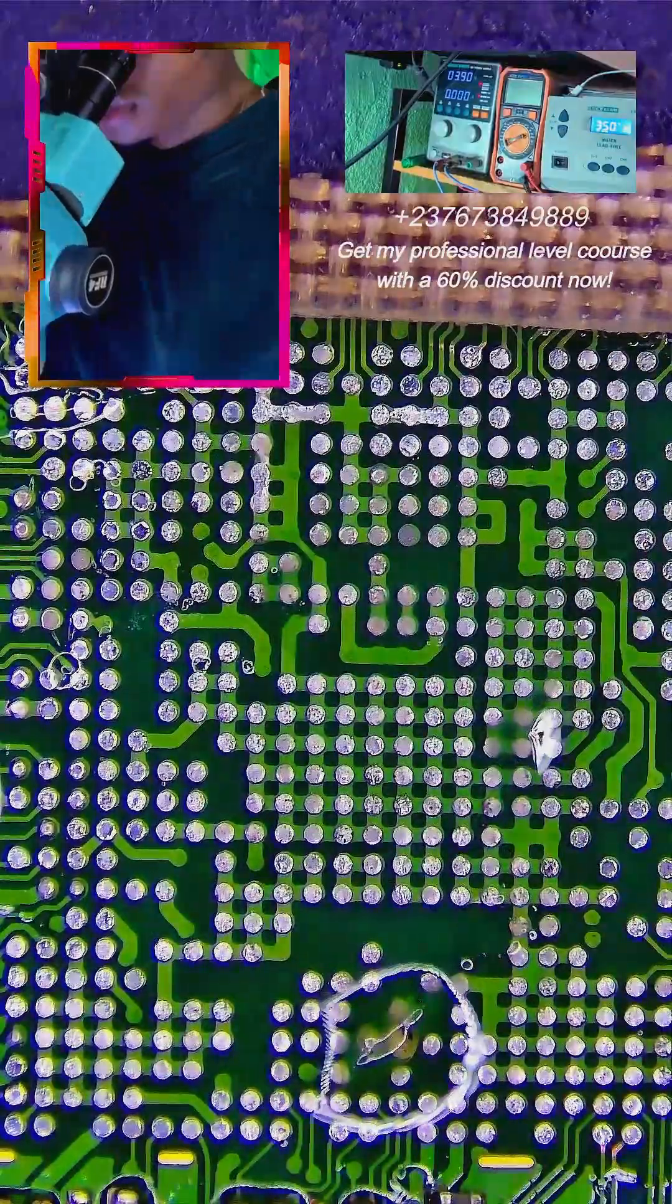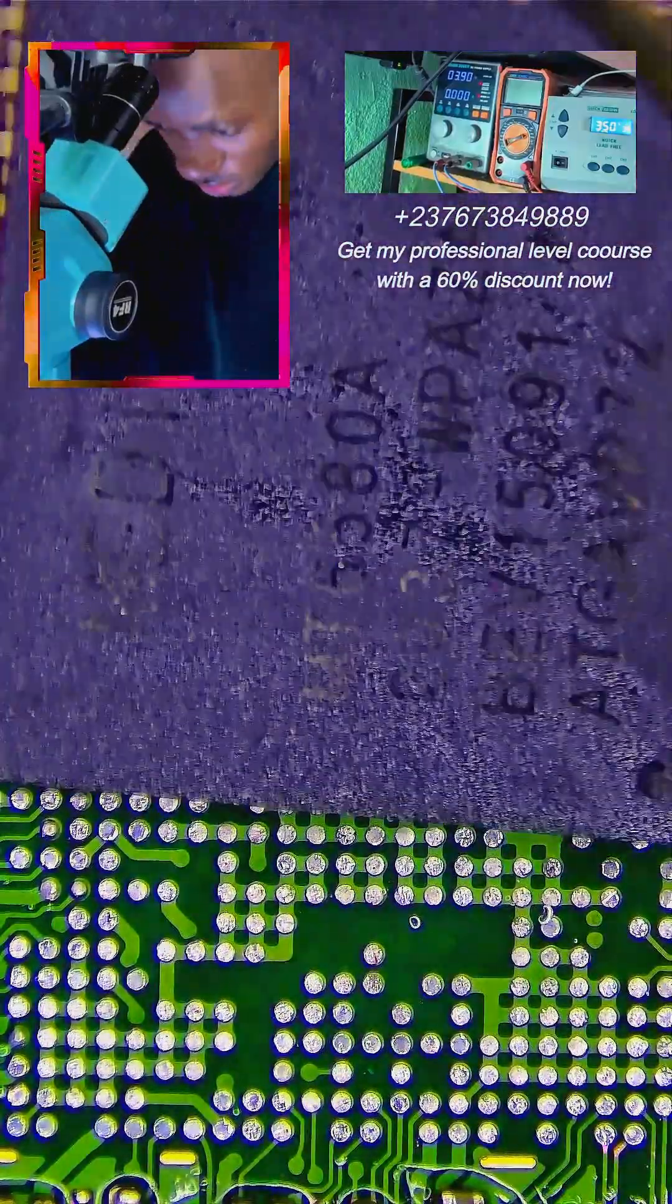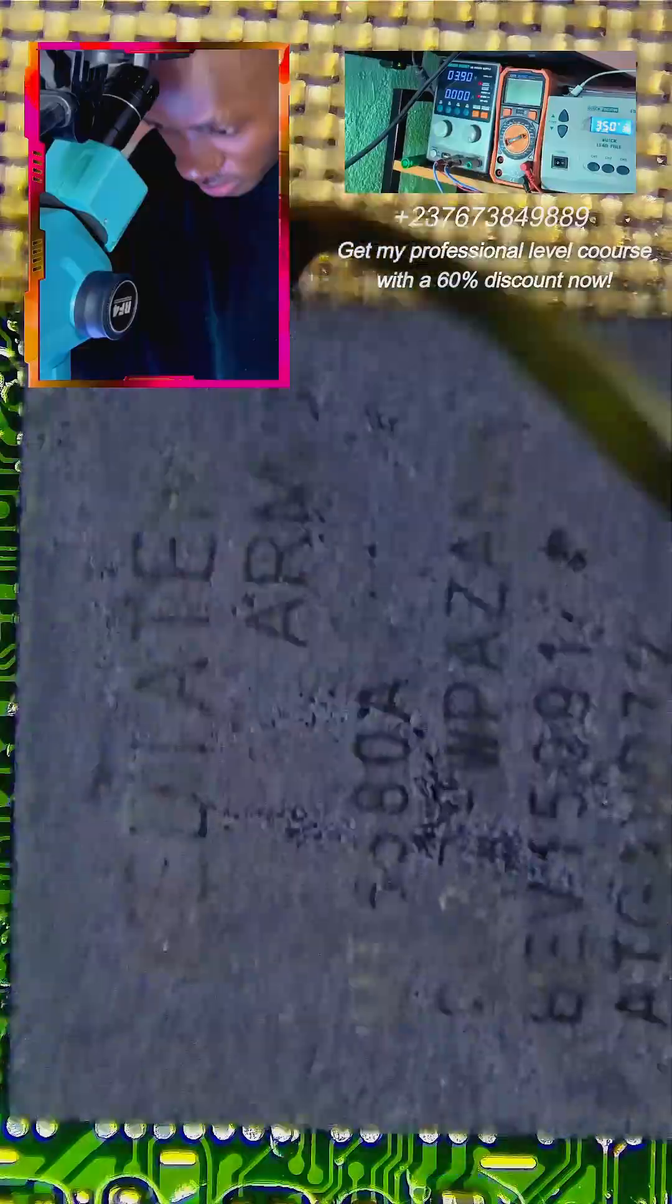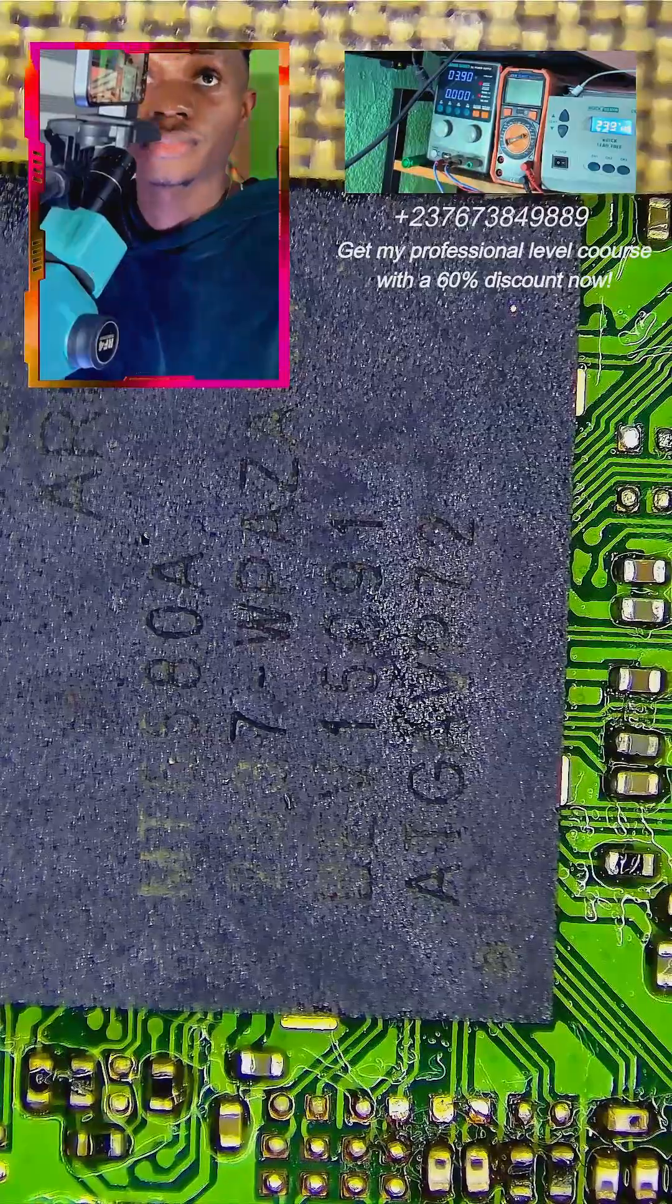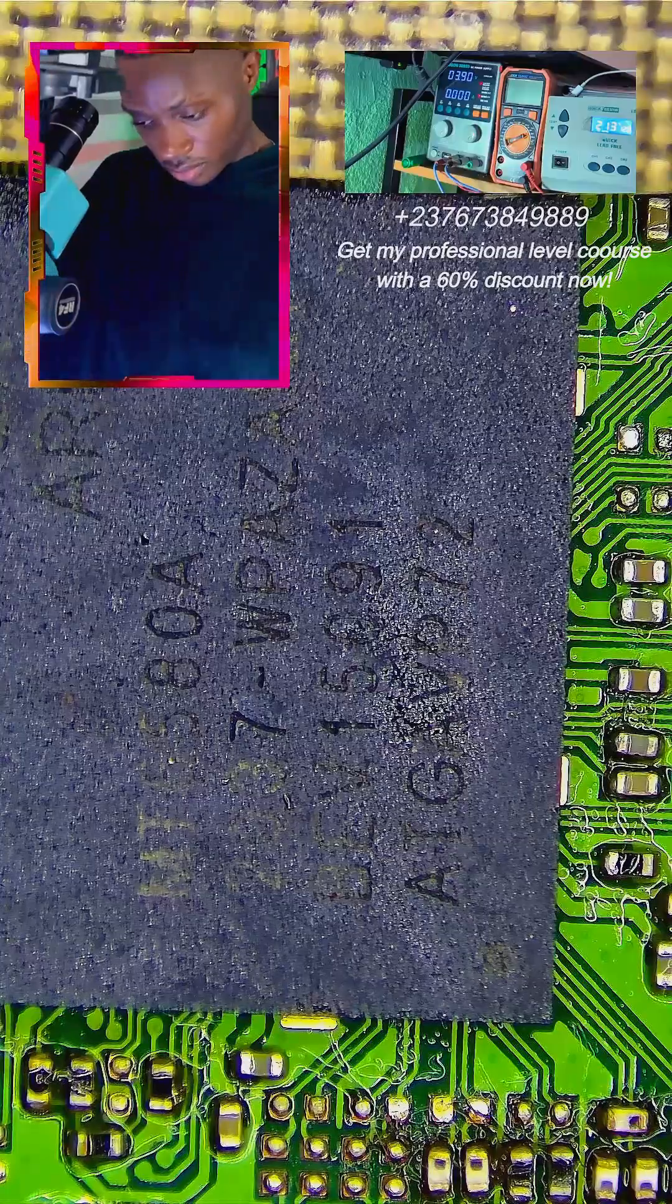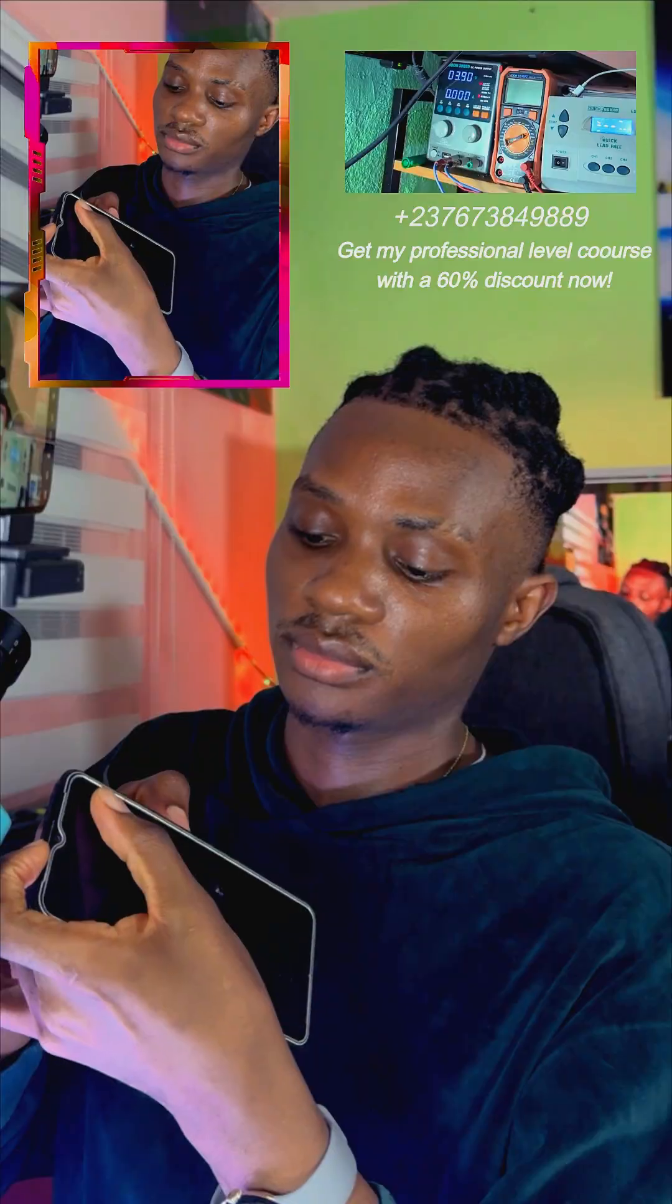We go ahead and apply a little bit of paste. I always say you don't have to apply too much paste, especially if your hands are not that steady for you to be heating the CPU while trying to adjust. I don't have that steady hand so I always make sure I apply a little bit of paste, position the IC well, then heat it, then shake it just a little bit and everything will be good.